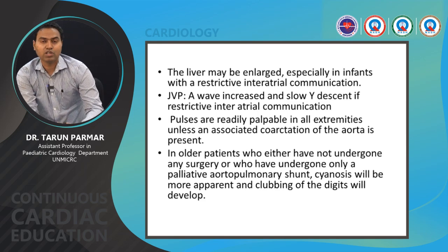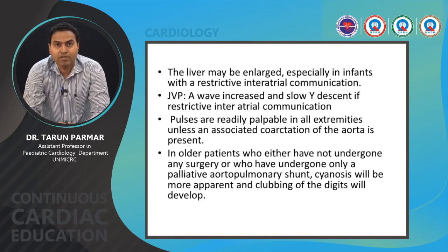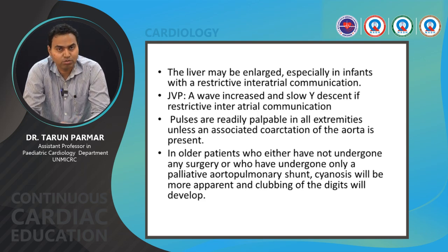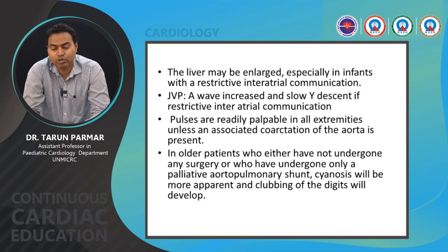The liver may be enlarged in cases of restrictive interatrial communication, and the A-wave is increased with slow Y descent. Pulses are readily palpable in all extremities unless coarctation is associated, in which case lower extremity pulses are feeble. In older patients who have not undergone surgery, there is deep cyanosis and a hypercoagulable state. Patients who have outgrown a systemic-to-pulmonary shunt typically present with deep cyanosis.